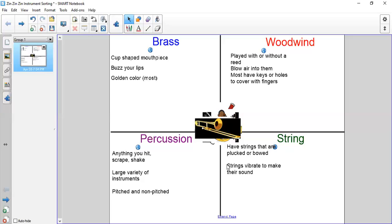String instruments include the violin, the bass, the cello. Other instruments could be a guitar, a ukulele, a harp.